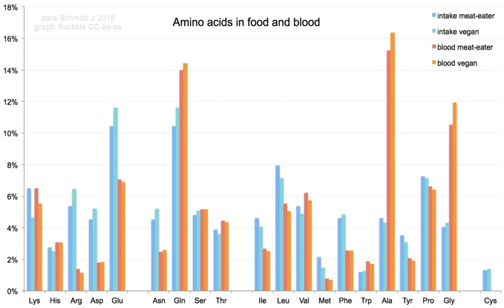Some non-standard amino acids are used as defenses against herbivores in plants. For example, canavanine is an analog of arginine found in many legumes, and in particularly large amounts in Canavalia gladiata. This amino acid protects the plants from predators such as insects and can cause illness in people if some types of legumes are eaten without processing. The non-protein amino acid mimosine is found in other species of legume, in particular Leucaena leucocephala, and is an analog of tyrosine that can poison animals that graze on these plants.